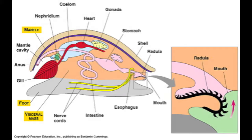Molluscs have three main body parts. The first is a muscular foot, which they use for movement. They also have a mantle cavity, which contains their gills, anus, and excretory pores. The radula is used to scrape up algae and other food particles from the sand. Most molluscs have separate sexes.